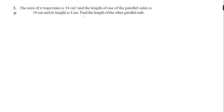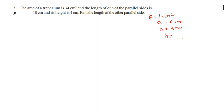Next question: the area of a trapezium is 34 centimeter square. The length of one of the parallel sides — so a is equal to 10 centimeter — is given. Height h is given as 4 centimeter. We have to find out b.